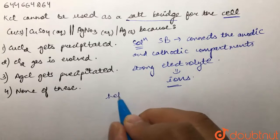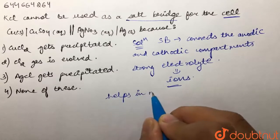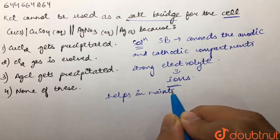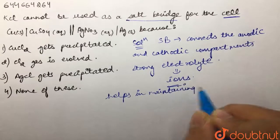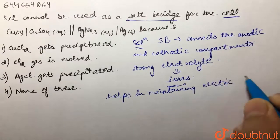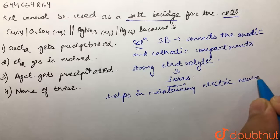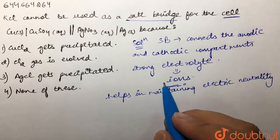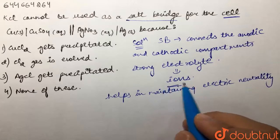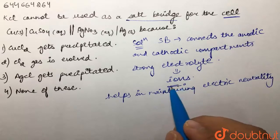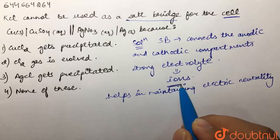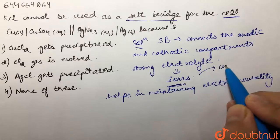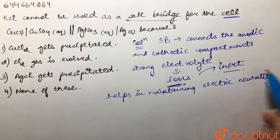These help in maintaining the electrical neutrality. But these ions should be inert with the cathodic and anodic solution, because if they react with the cathodic or anodic solution, they will give us some other product which is not desirable. So these ions must be inert.